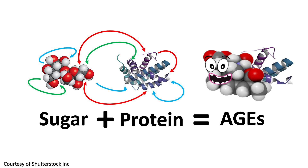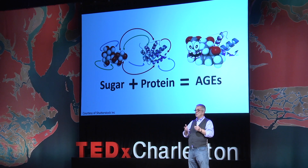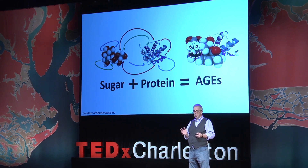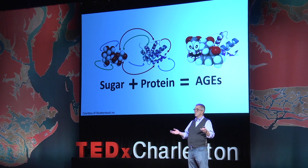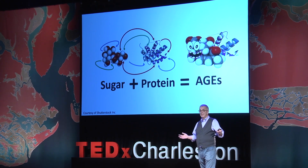AGEs are produced in a number of different ways, but one of the most common is when sugar comes into contact with protein — there's a spontaneous rearrangement and they actually produce AGEs. This happens in the body; the same thing happens when sugar comes into contact with fats, and the same thing happens when sugar comes into contact with your DNA. So you can see that all aspects of our lifestyle are increasing AGEs in the body, and that can't be a good thing.